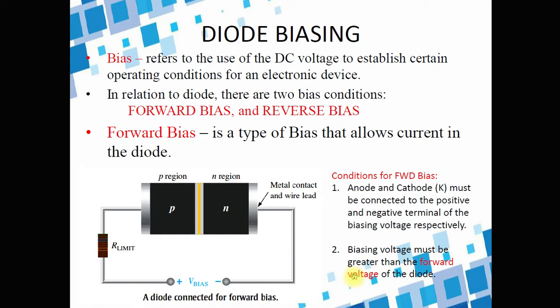So, diode biasing. Bias is a term used for the application of DC voltage to a diode. Biasing means application of DC voltage to a diode to establish certain operating conditions for an electronic device. In biasing, we have two bias conditions: we have the forward bias and we have the reverse bias.